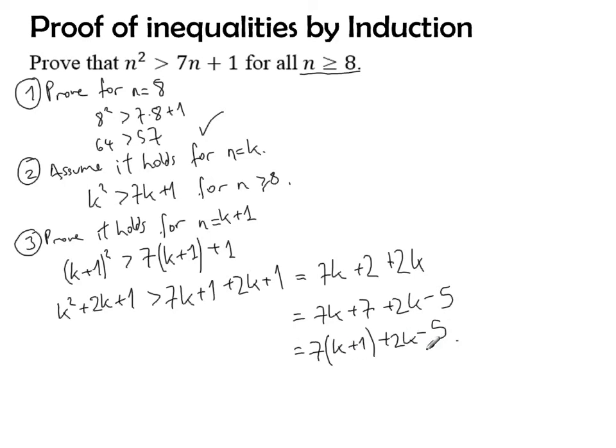I'm very close to what I have to prove. I already have that (k+1)² must be bigger than 7 times (k+1) plus 2k minus 5. So that's all good.